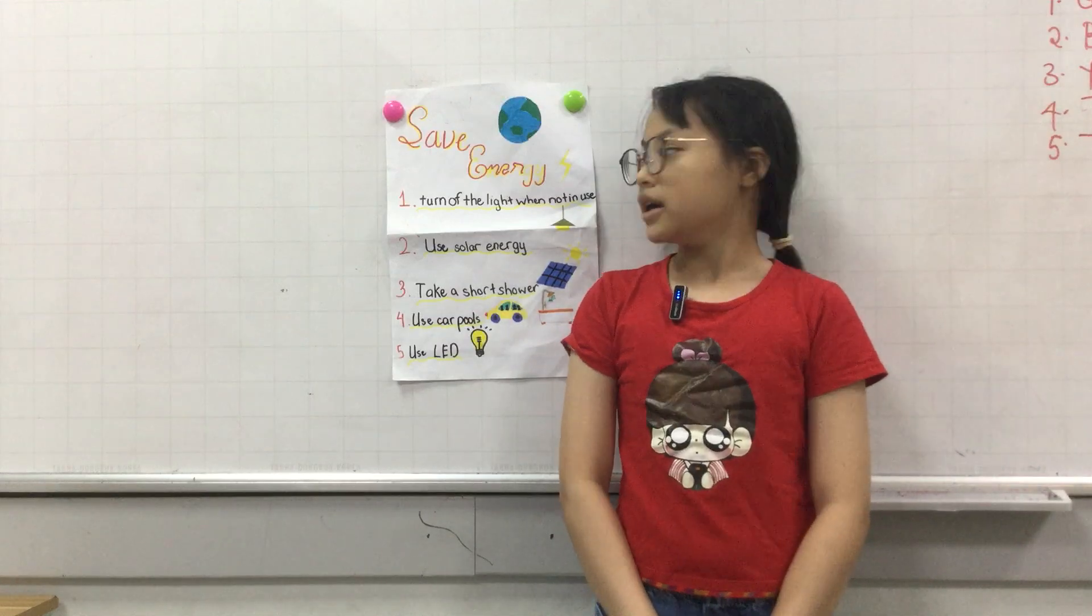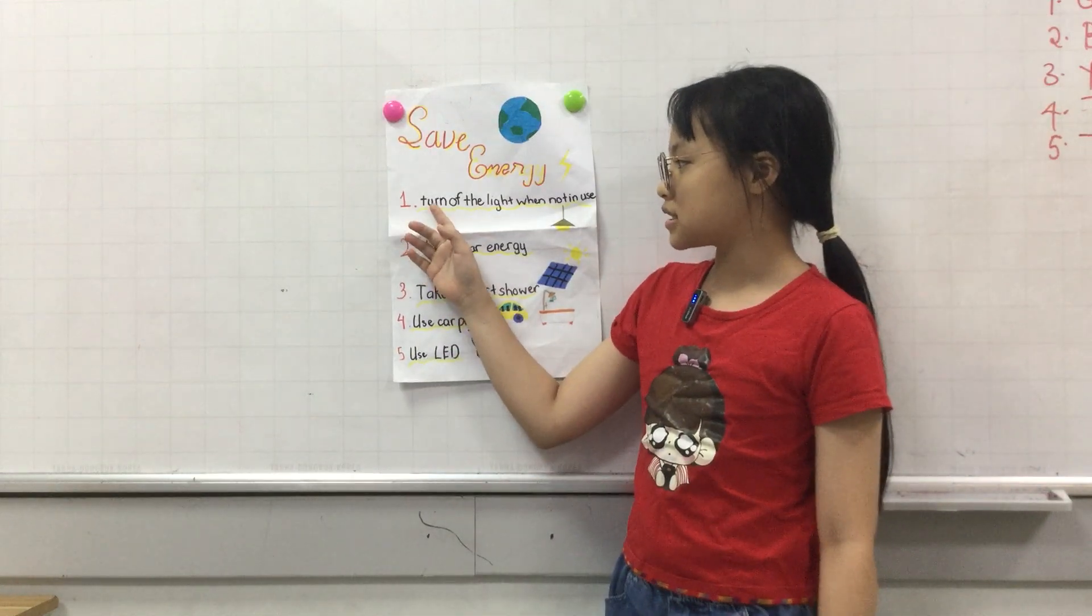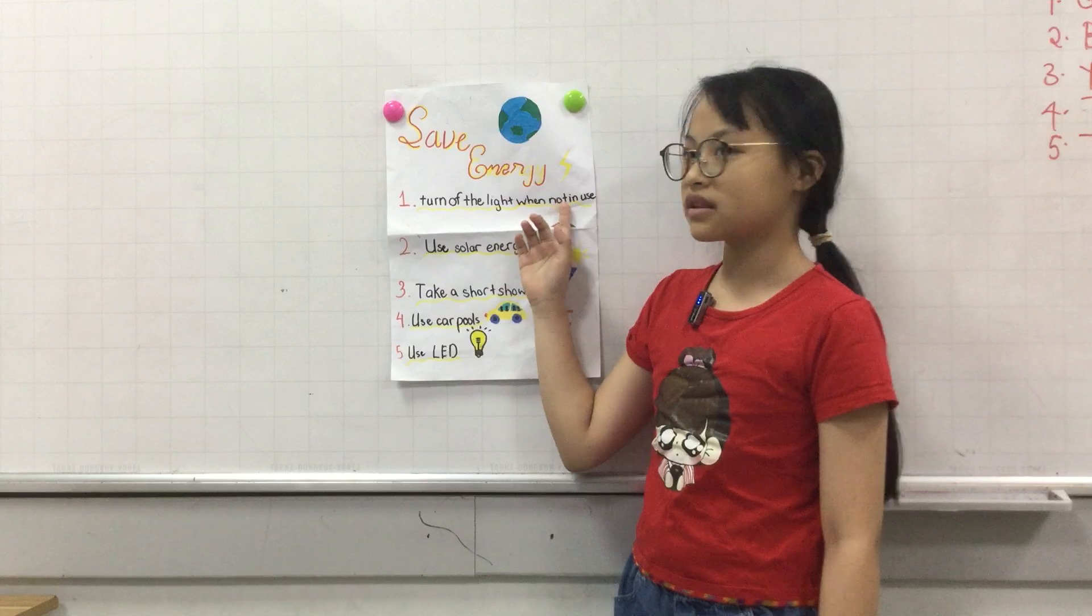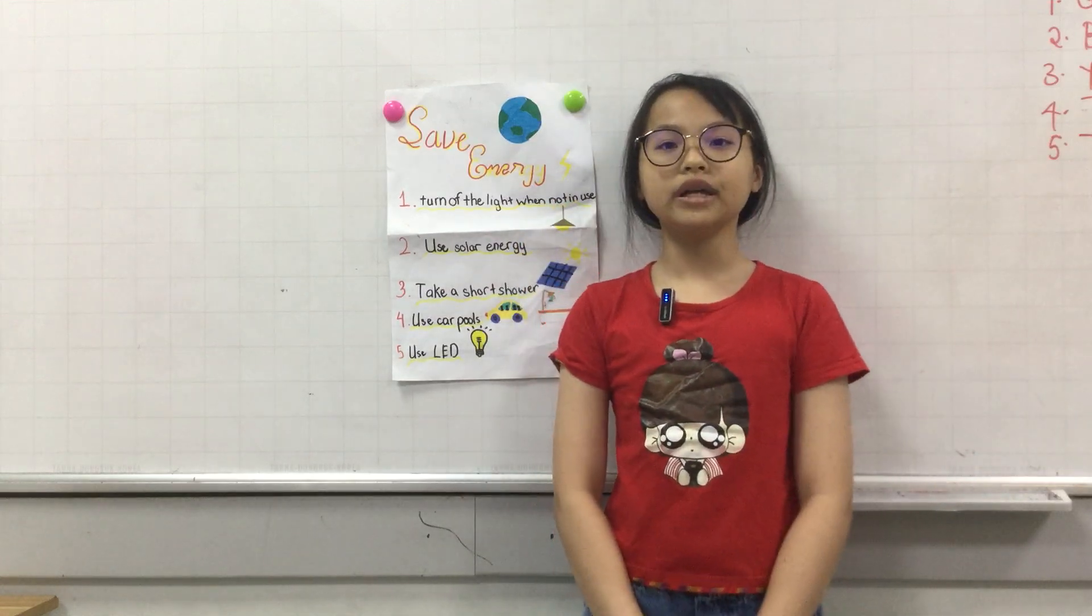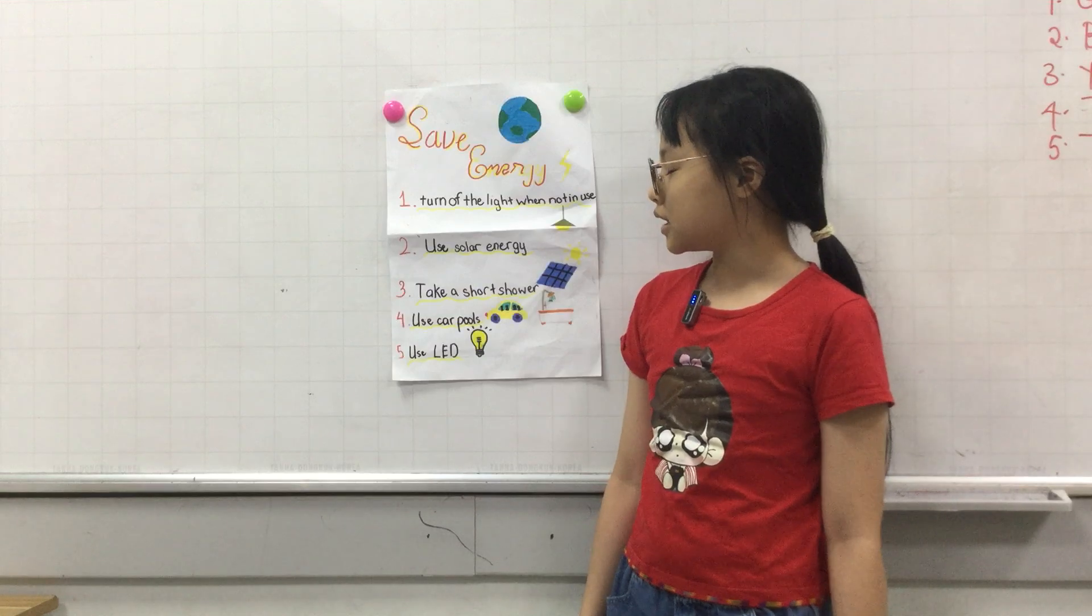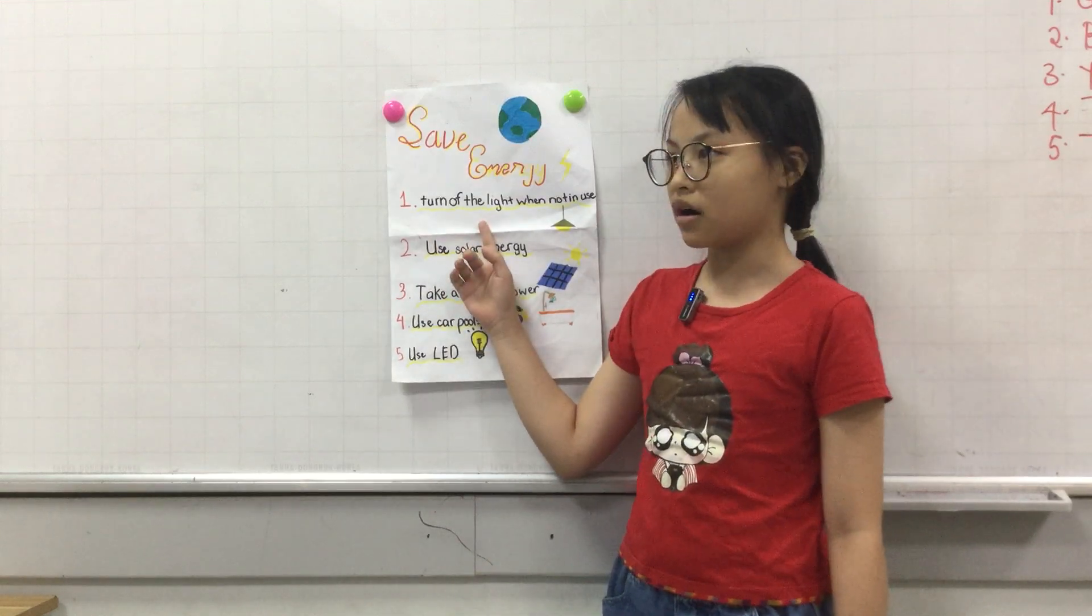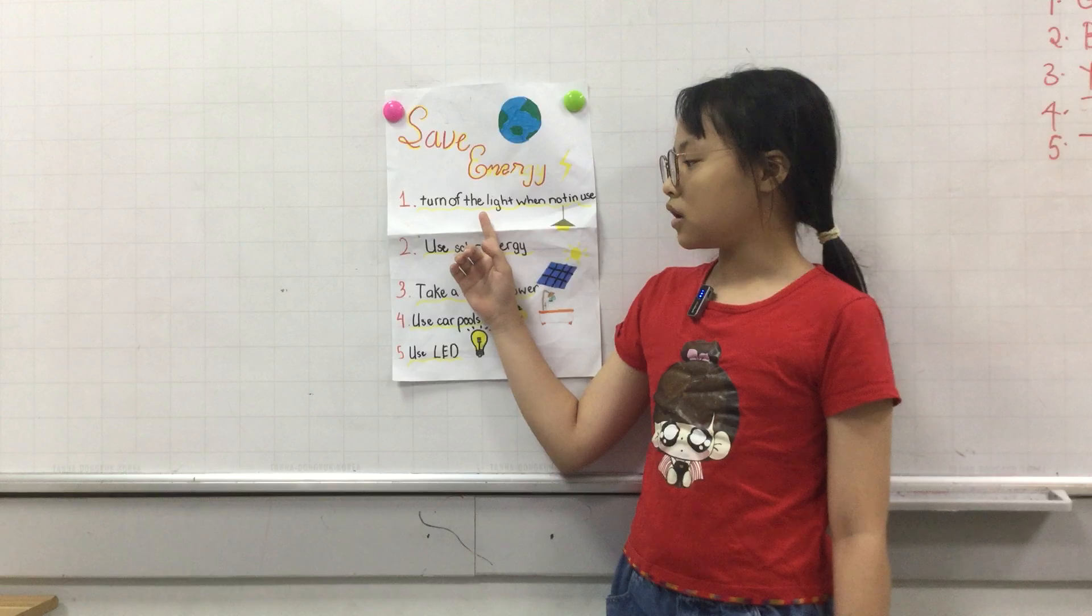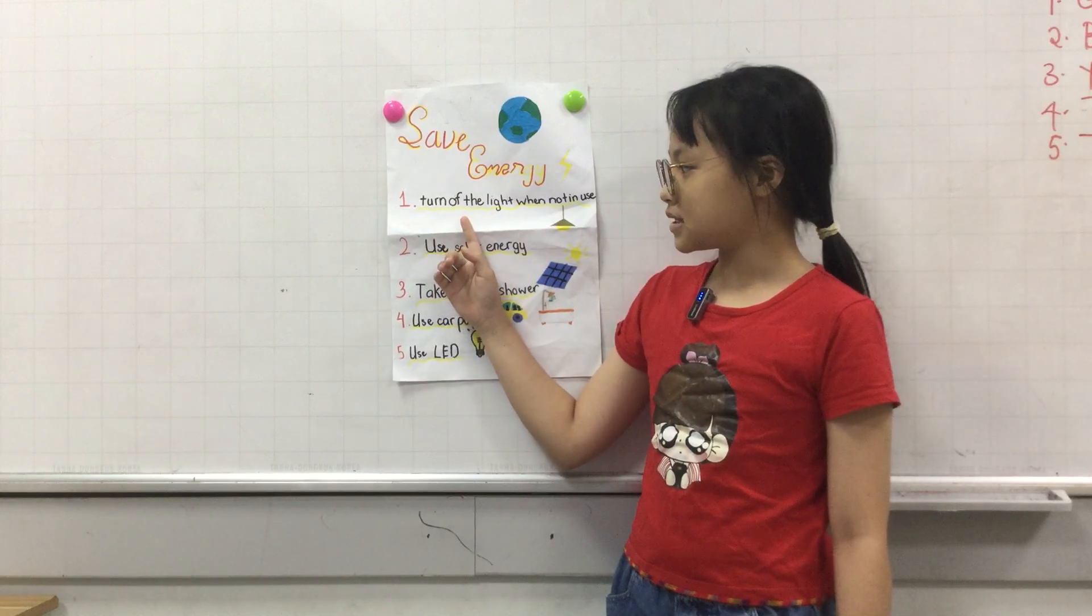The first way to save energy is to turn off lights when not in use. When you're outside and not using the light, you need to turn them off to avoid wasting energy.